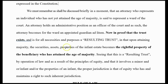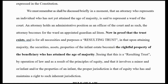We must remember that an attorney who represents an individual who has not yet attained the age of majority — and remember that doesn't have to be someone under 18, it can also be an adult — is said to represent a ward of the court. An attorney holds an administrative position as an officer of the court, and as such the attorney becomes the ward's appointed guardian ad litem. In proof that the trust exists and is for all necessities and purposes a resulting trust: upon attaining majority, the securities, assets, and properties of the infant become the rightful property of the beneficiary who has attained the age of majority.